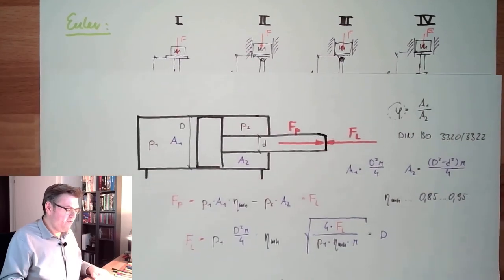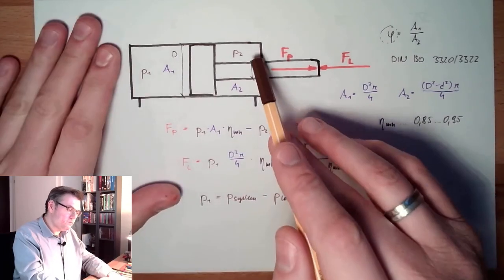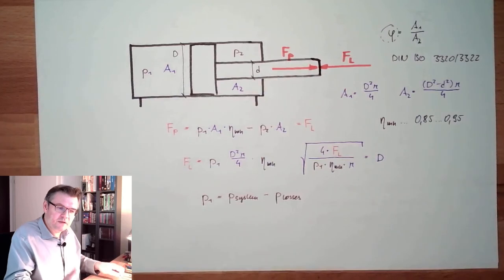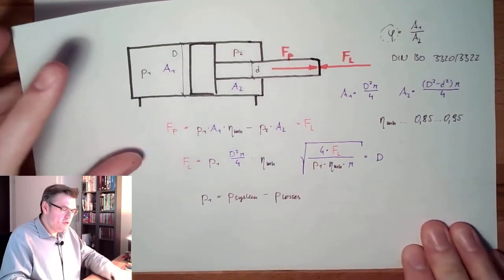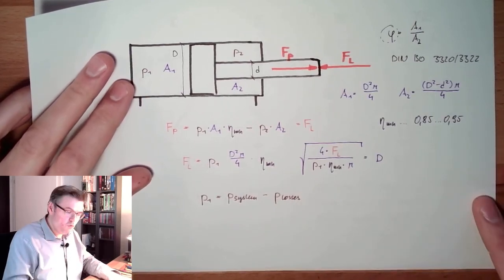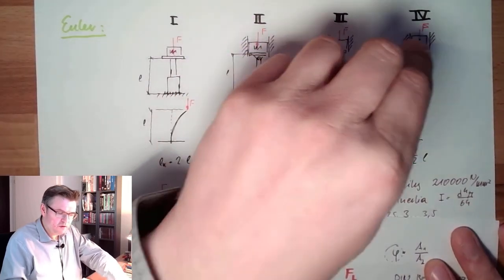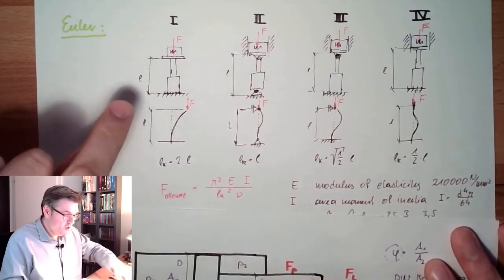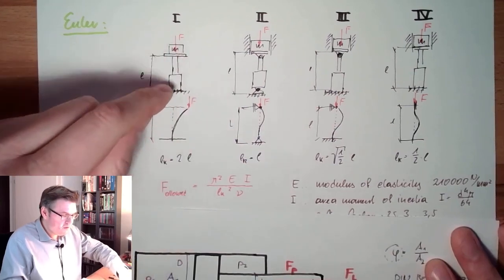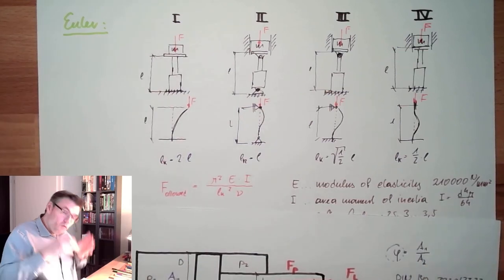The cylinder length I have to choose depending on the application — how far does it need to move? Attention: this is not only the movement length; it is twice the movement length, because we have to account for the rod going into the cylinder as well. So now the mechanical parameters of my cylinder are fixed.